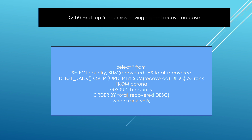The next question is: find the top 5 countries having the highest recovered cases. Basically I used DENSE_RANK() with OVER and ORDER BY — these are window functions. The query is: SELECT * FROM (SELECT country, SUM(recover) AS total_recover, DENSE_RANK() OVER (ORDER BY SUM(recover) DESC) AS rank FROM corona GROUP BY country ORDER BY total_recover DESC) WHERE rank <= 5. The output shows only the top 5 countries. That's it.